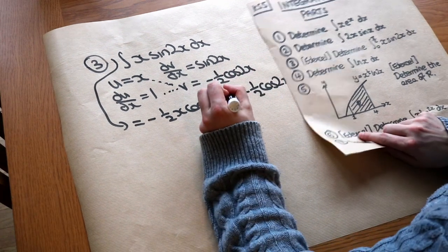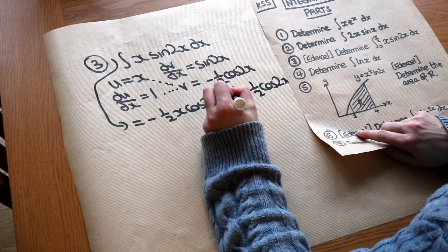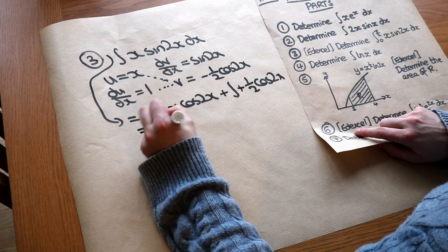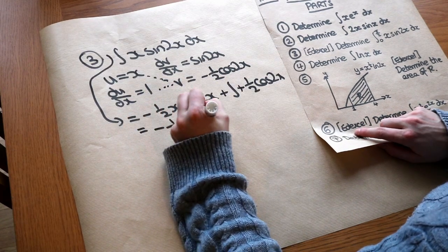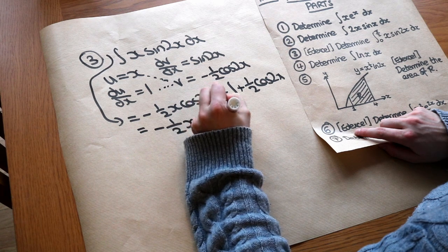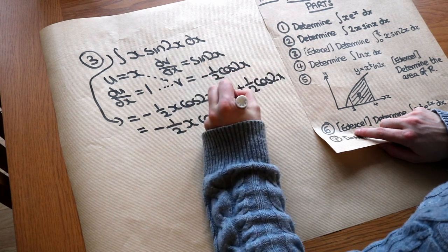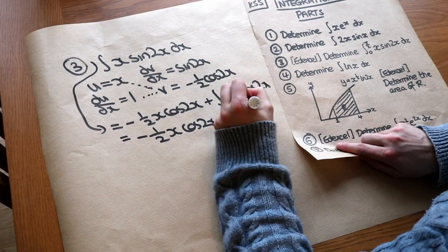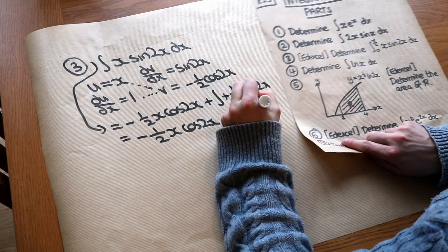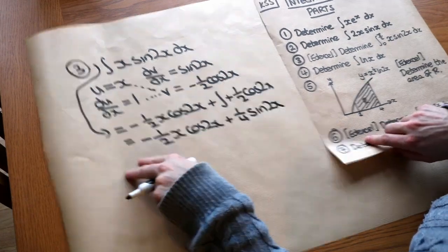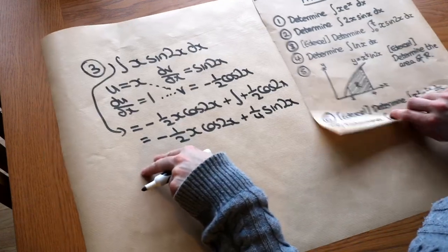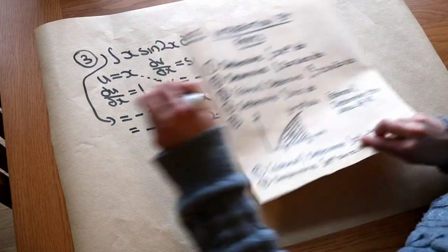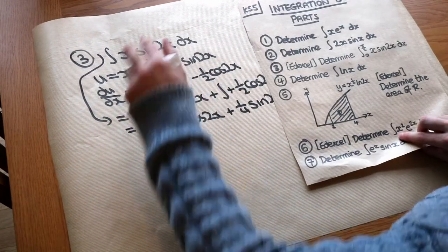Those two minuses cancel to give a plus. That gives us −½x·cos(2x), and then integrating cos(2x) with the factor — dividing by 2 again — gives plus ¼sin(2x). We're not going to have the plus c this time because we can just put in our limits, since this is a definite integral.